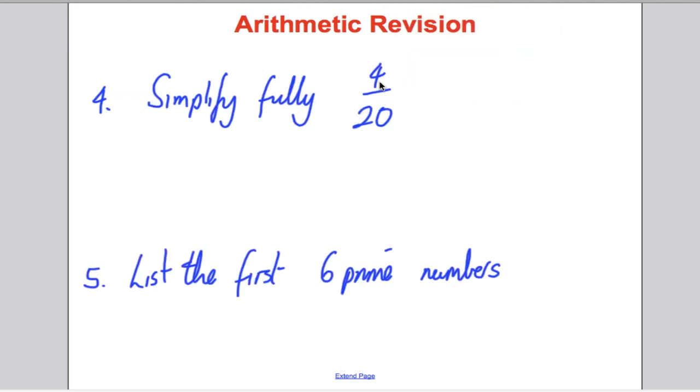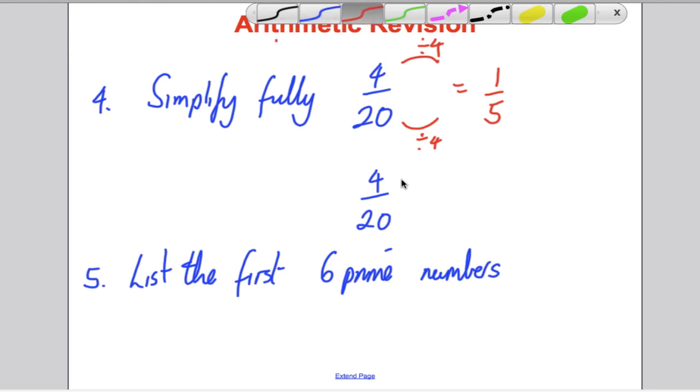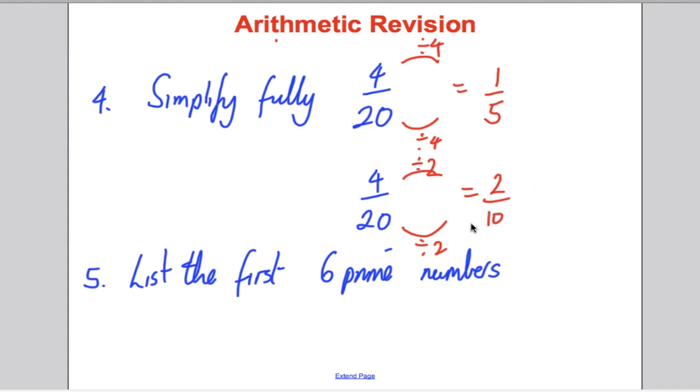To finish with, we had two very simple questions. Simplify the fraction four divided by 20 or four over 20. Can you think of a number that divides into four and 20? Can you think of a number that goes into four and 20, the biggest number you can? Well, if you realise four goes into both, you could divide the top and the bottom by four, and you would get one fifth. Some of you would like doing it in stages. Some of you might decide to yourself, well, I know two does, so I divide top and bottom by two, and I'd get two over ten. But I'd need to think, does any number go into two and ten? Well, a two does again, and I'd get the one over five like I did originally.